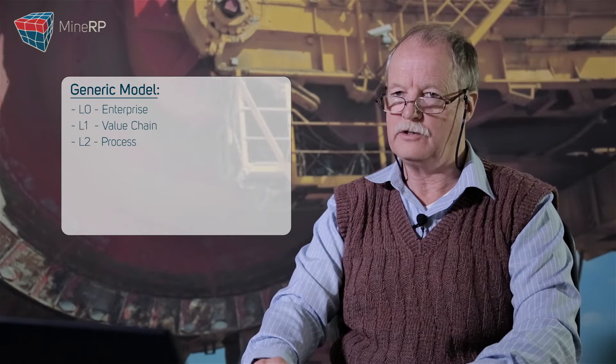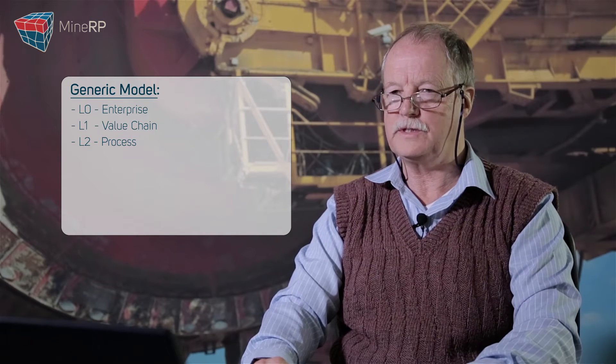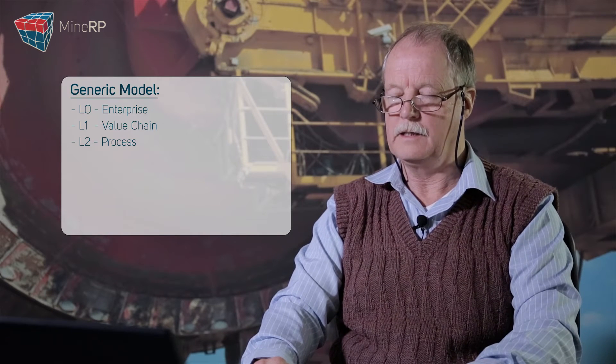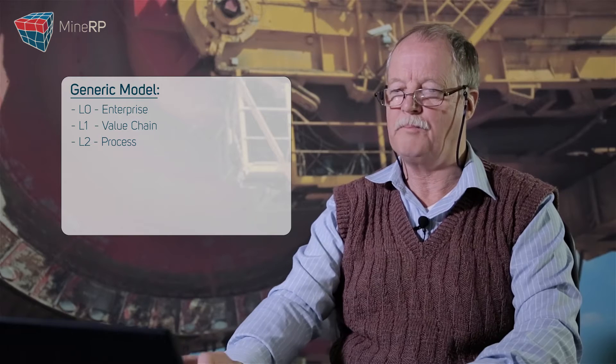What the model does for us: at the first level — level zero, as we call it — that is the enterprise level. We have level one, which is the value chain level, and level two is the process layer. You have all of that on one page.